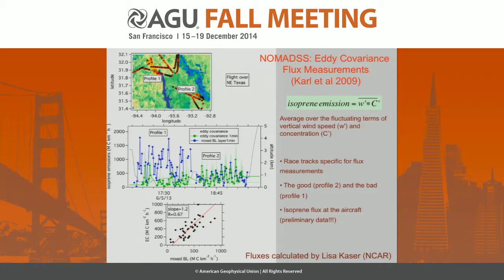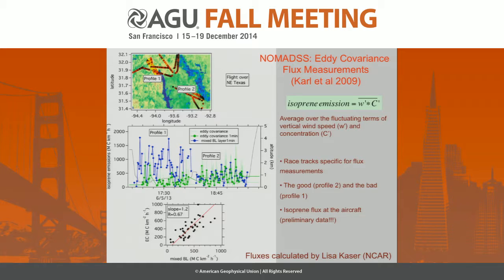The PTRMS on the C-130 was run in a fast mode to enable eddy covariance flux measurements, and racetracks were flown at different altitudes to get a better handle on the eddy covariance fluxes. The formula for calculating isoprene emissions from these fluxes is basically the average of the fluctuating term of the vertical wind and the isoprene mixing ratios measured. Results are shown here in green with the mixed boundary layer method overlaid on the same time series.